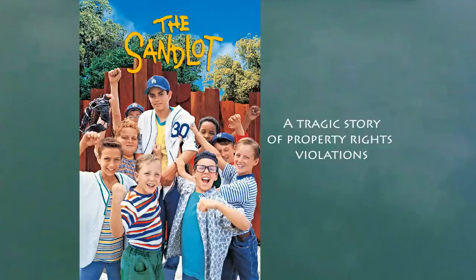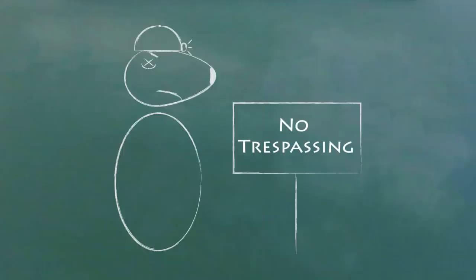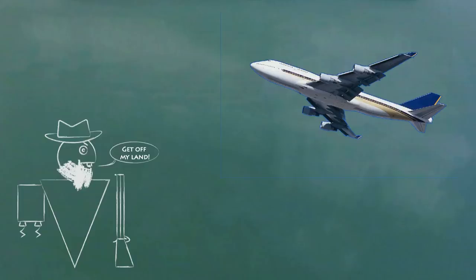It used to be that your land rights extended upwards to the heavens and down into the earth. Now you get rights for a short distance in either direction but nothing further, which makes sense from the perspective of the airlines.